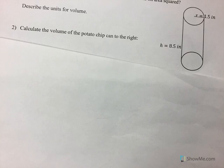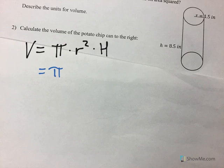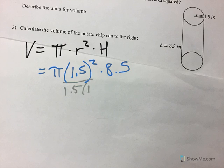So in fact, calculate the volume of the potato chip can to the right. Now this is a cylinder, so we're going to be using volume equals pi times the radius squared times the height. So I have pi. My radius is 1.5 inches squared times the height of 8.5. Now remember that exponents are just repeated multiplication. That's like 1.5 times 1.5.